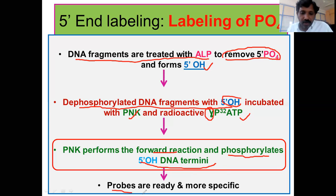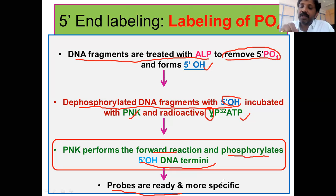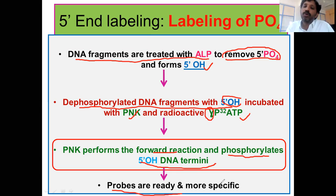Now the probes are ready and these probes are very specific, because we did not incorporate any nucleotides into the probe preparation — we only replaced the normal phosphate with the radiolabeled phosphate. Non-specific binding won't be seen with 5'-prime end labeling of phosphates, so the probes prepared in this manner are very specific. However, the sensitivity will be less because only one functional group is radiolabeled.